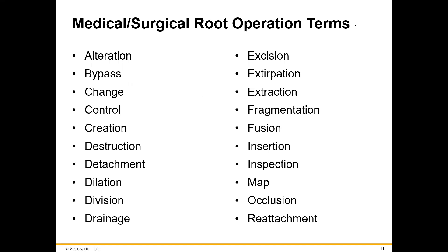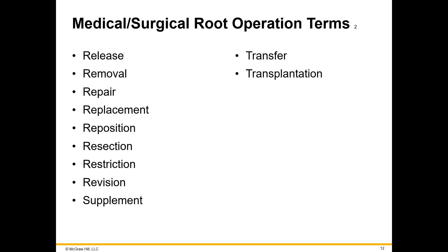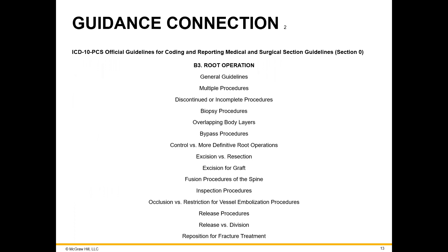The third character is the root operation. This is the one that normally people struggle with — the difference between excision and extraction, inspection versus change, bypass versus alteration. Please pay special attention to these terms. You can dissect exactly what happens in the operative record. Some more root terms: release, removal, repair. The guidelines are specific.